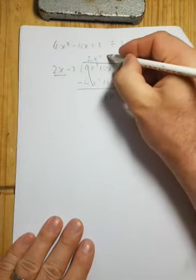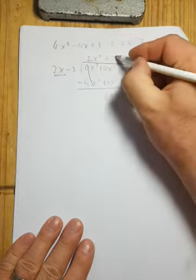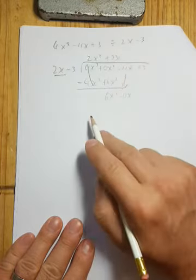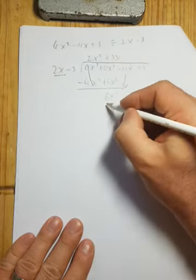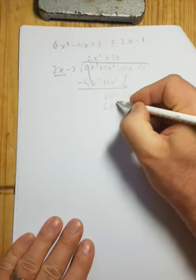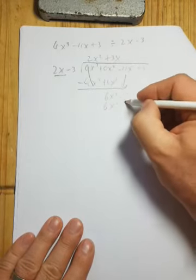Dividing. 2 into 6 is 3 times, x into x squared is x. Next, we multiply. 2 by 3 is 6, x by x is x squared. 3 by minus 3 is minus 9x.